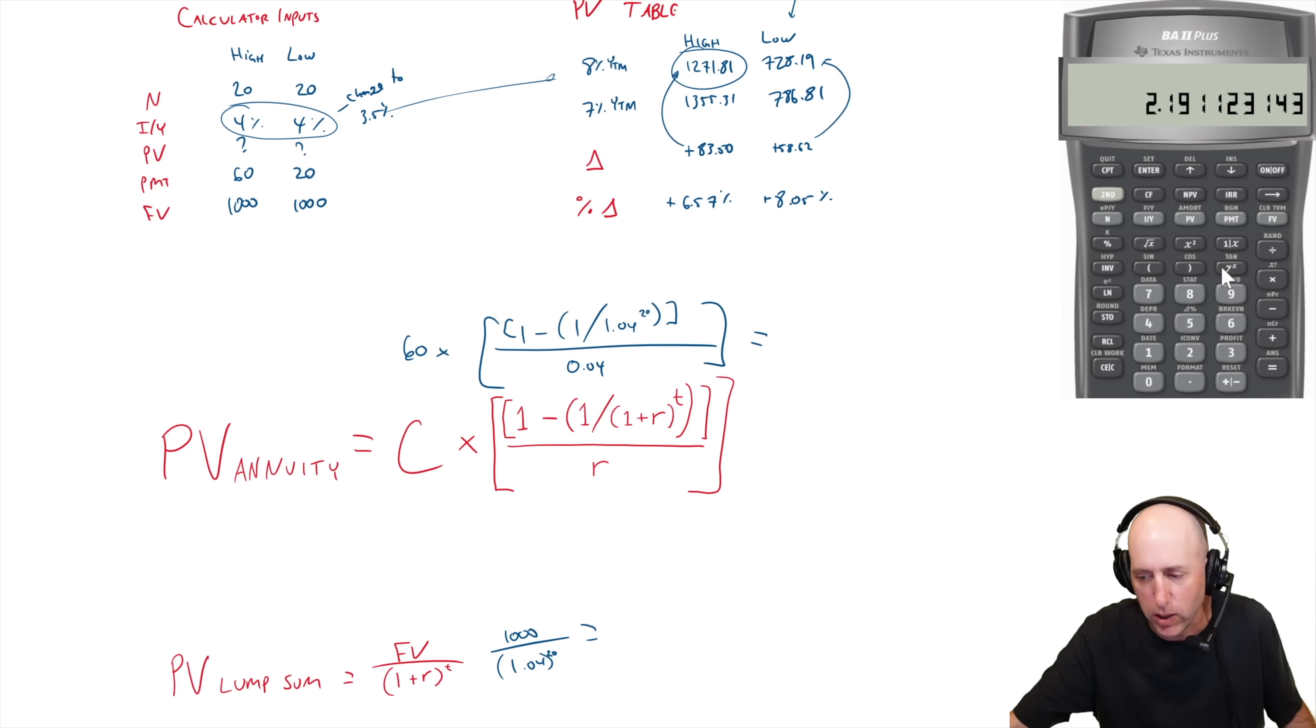Let's run the numbers. 1.04 to the power of 20 is 2.19. I go 1 over x, 0.45. 1 minus that, 0.54. Divided by 0.04, I'm at 13.59. I multiply by 60, $815.42. Do the bottom one: $1,000 divided by 1.04 to the power of 20. 1.04 to the power of 20, 2.19, 1 over x times 1,000, $456.39. So combine these two: $456.39 plus $815.42, and there's some rounding here, but $1,271.81.